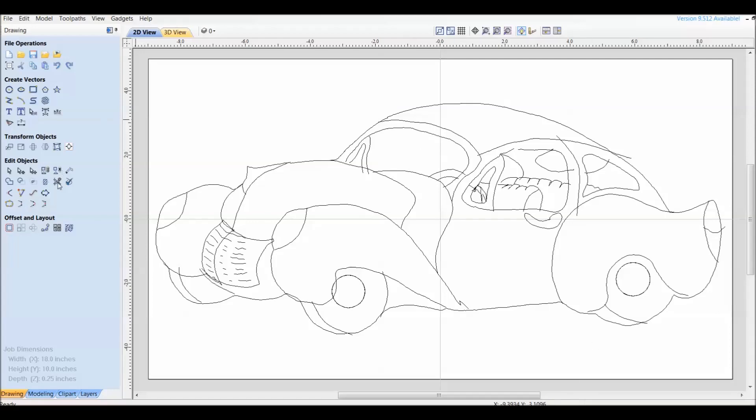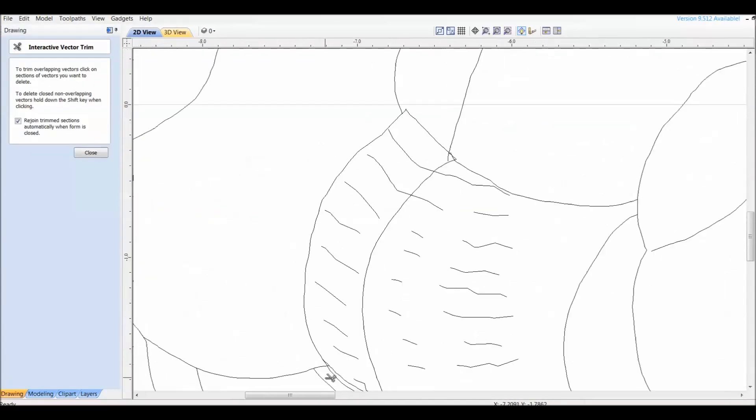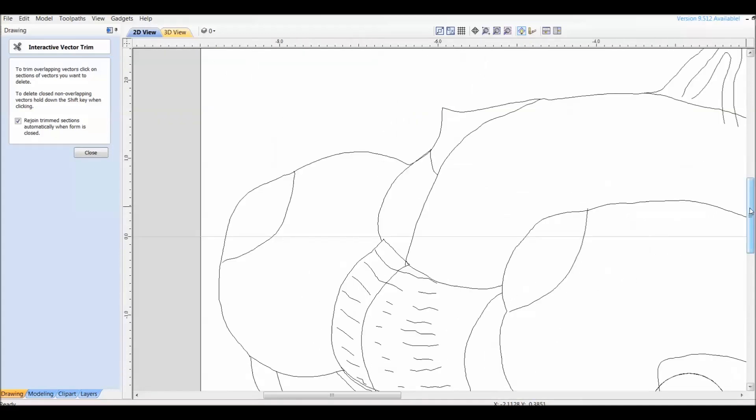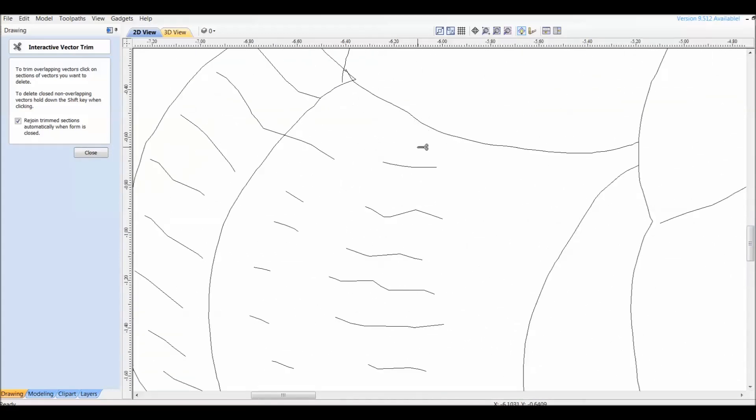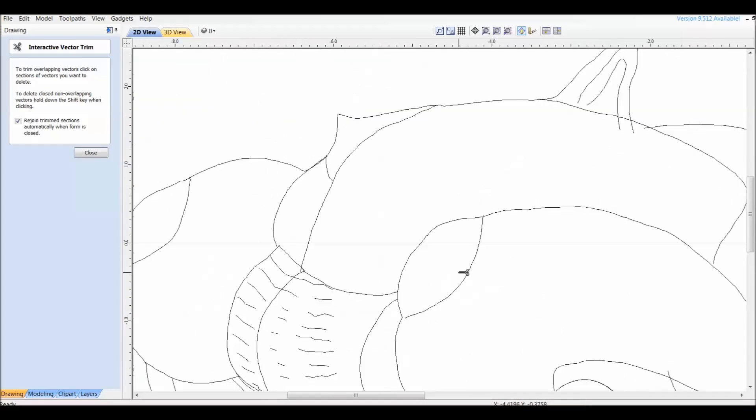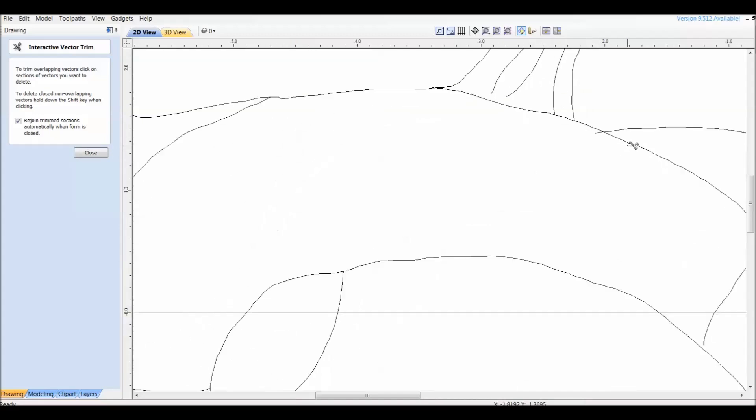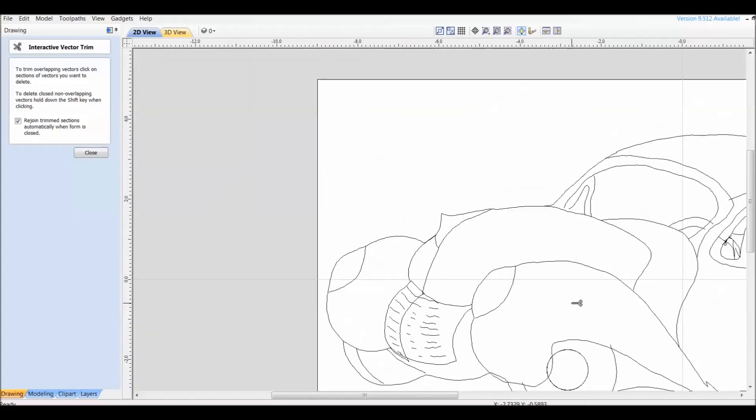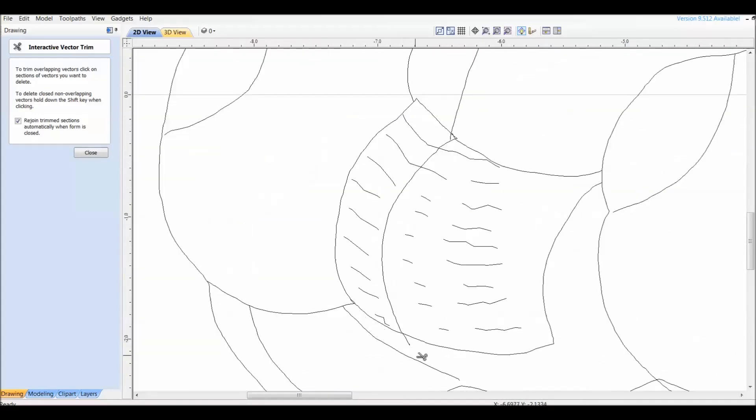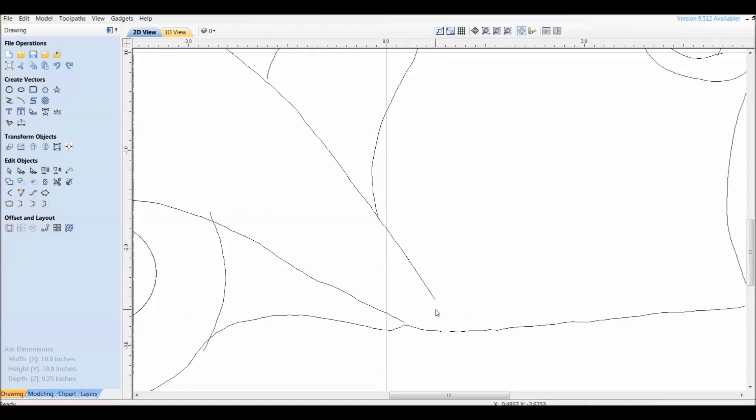I loaded the diagram into Aspire, the vector editor Aspire 9.5, and you can see here where I'm trimming some of those vectors that overhang using the scissors. I also had to edit some of the vectors, I had to extend them. You can see here where I had to pull that vector right down over a line and then cut it off.